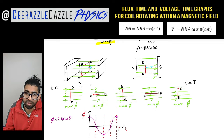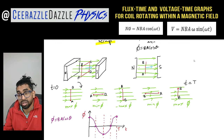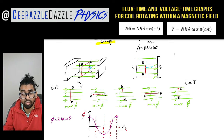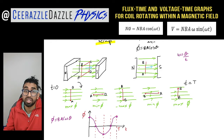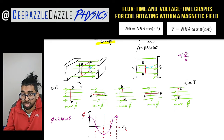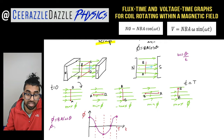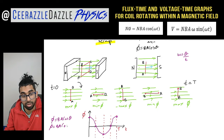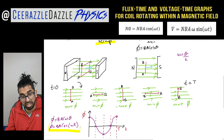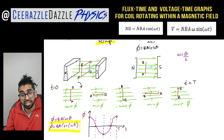You might be thinking θ refers to an angle, but we can incorporate time into this equation. The angular velocity ω equals θ/t (the rate at which it spins). We can replace θ with ωt, so therefore phi = BA cos(ωt). This gives us an expression for flux against time, and it matches up with the graph we have here.